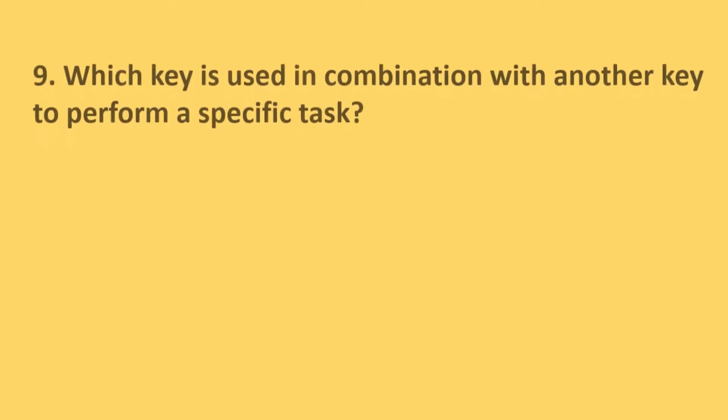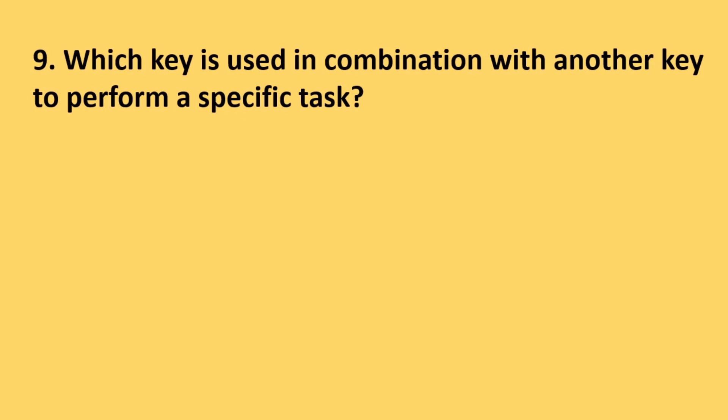Question number 9: Which key is used in combination with another key to perform a specific task? Options are function, control, arrow and space bar. The correct answer is option B, control. Control key is used in combination with another key to perform a specific task.